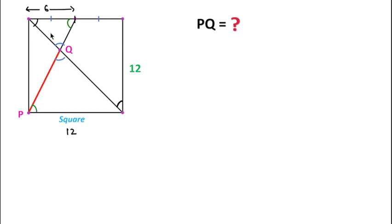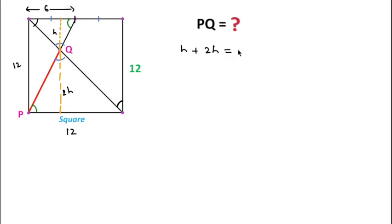Let's suppose this side length is x, then the corresponding side length will be 2x. Similarly, everything will be in the ratio 1:2. If we consider the height of the smaller triangle to be h, then the height of the larger triangle will be 2h. And this perpendicular line is parallel to the side length of the square, which equals 12.